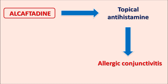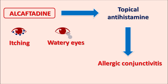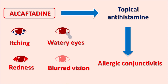Allergens can produce eye inflammation resulting in conjunctivitis, leading to various symptoms such as itching within the eye. This can stimulate lacrimation resulting in watery eyes, and this allergic response can also increase the redness of the eye. Even the vision can be blurred. All these symptoms are because of the allergic response which produces inflammation within the eye, which can be controlled by Alcaftadine.